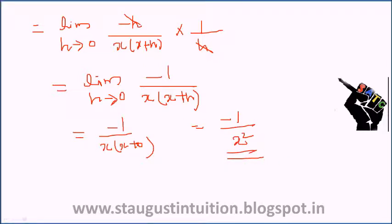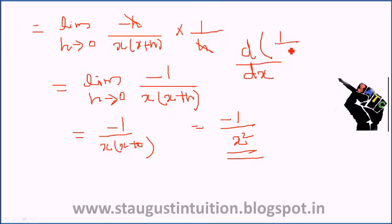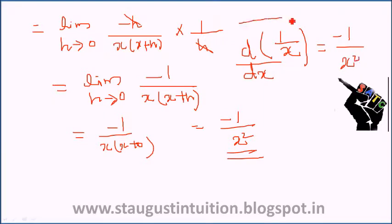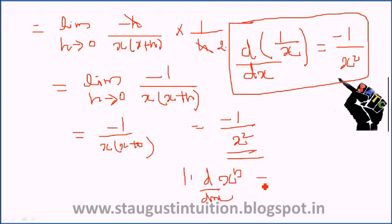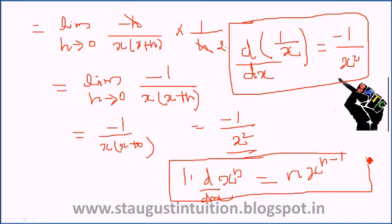So d by dx of 1 by x equals minus 1 divided by x squared. This is the second formula. Please remember both formulas: d/dx of x raised to n equals n times x raised to n minus 1, and d/dx of 1 by x equals minus 1 by x squared.